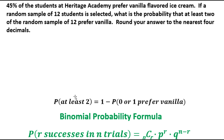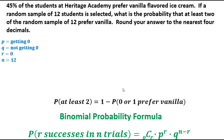So we're going to find the probability that 0 prefer vanilla and the probability that 1 prefers vanilla, then subtract both from 1. Our p-value is 0.45 — the probability of success, getting a student who prefers vanilla. Our r-value is 0 — we want 0 successes. And the n-value is 12, since there are 12 students we're selecting.